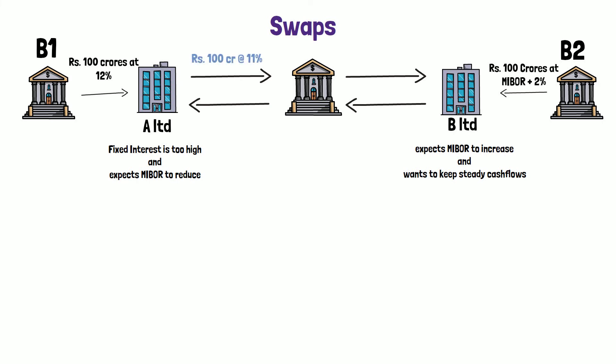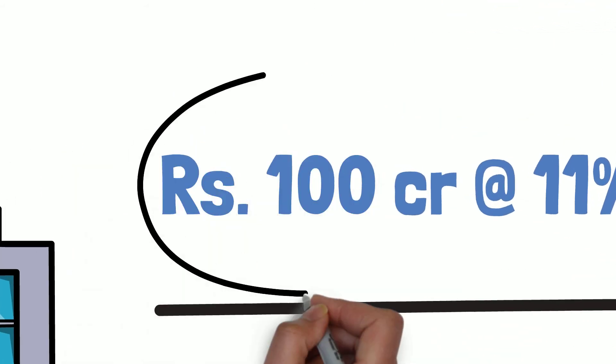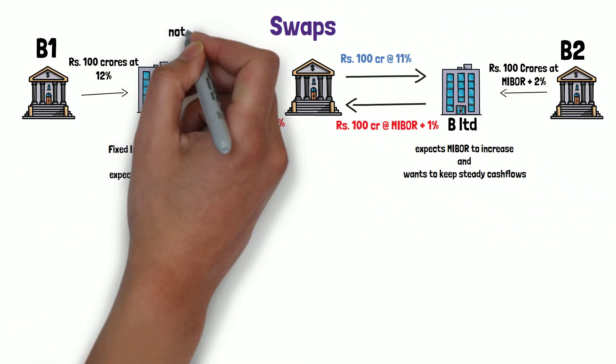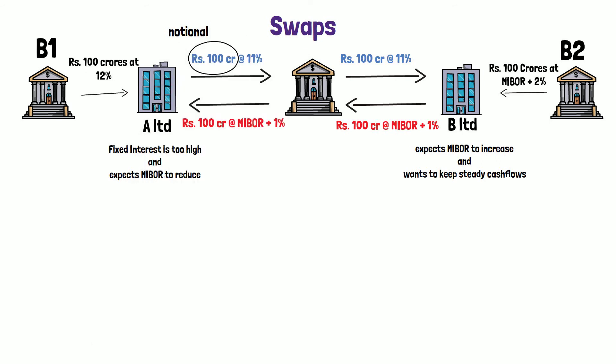In the swap arrangement, it was decided that A Limited will give a 100 crore rupee loan to B Limited at 11% per annum, and B Limited will give a 100 crore rupee loan to A Limited at MIBOR plus 1%. In such swap arrangements, the principal amount is notional — it is just an exchange of interest rates.